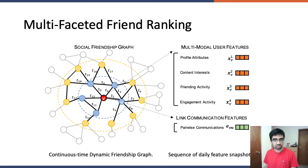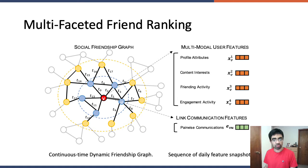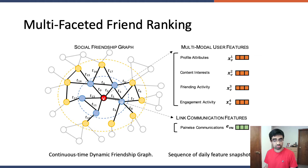In our work, we formulate friend suggestion as multifaceted friend ranking on an evolving friendship graph with multimodal user features and pairwise link communication features. The friendship graph is modeled as a continuous-time dynamic graph with the expressivity to record friendships at the finest possible temporal granularity. We represent features as a sequence of daily snapshots since such features are commonly extracted by routine batch jobs and populated in a database at regular time intervals. In total, we extract four modalities of user features: profile attributes including mostly static demographic features like age, gender, and location; in-app content interest describing textual content viewed or posted by the user; friend creation and engagement activities including aggregated number of friend requests, reciprocated friendship suggestions, and indirect interactions with other users; and pairwise link features that capture direct communication of users with other users in the platform.